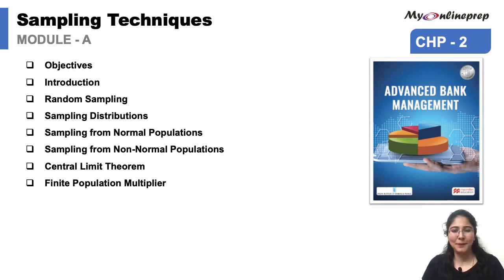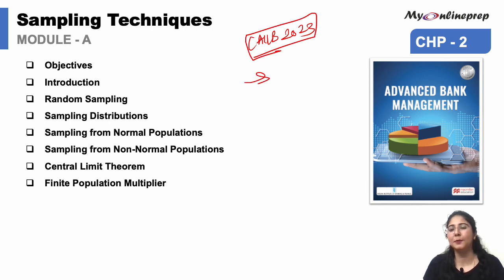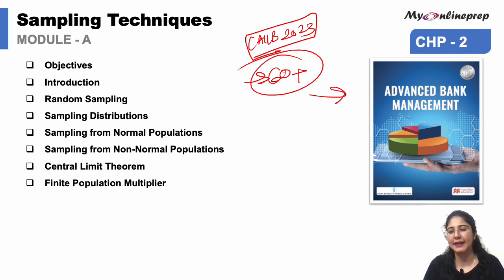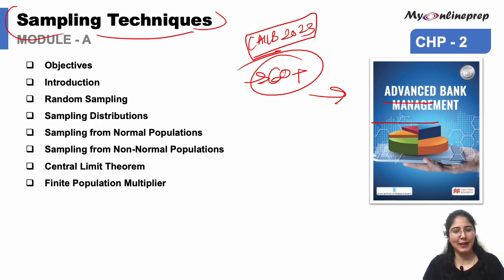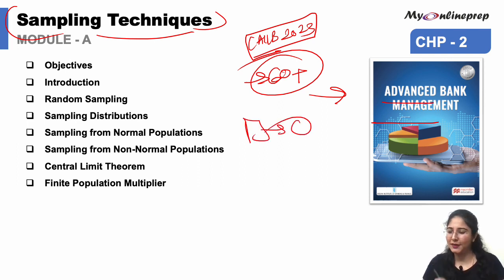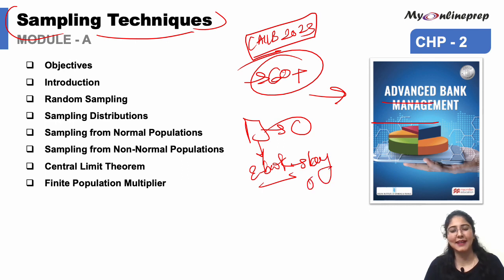Hello everyone, welcome to my online prep. I hope you all have seen the first video. Today we have the second class of the series for the CAIIB exam 2023. The main motive is scoring more than 60 plus in your examination, and this is for the Advanced Banking Management paper one. The chapter title suggests sampling technique, which means studying a sample from a pure portion. In a short duration of time, we have bulky books and ebooks, so the aim is to revise key concepts and MCQs.